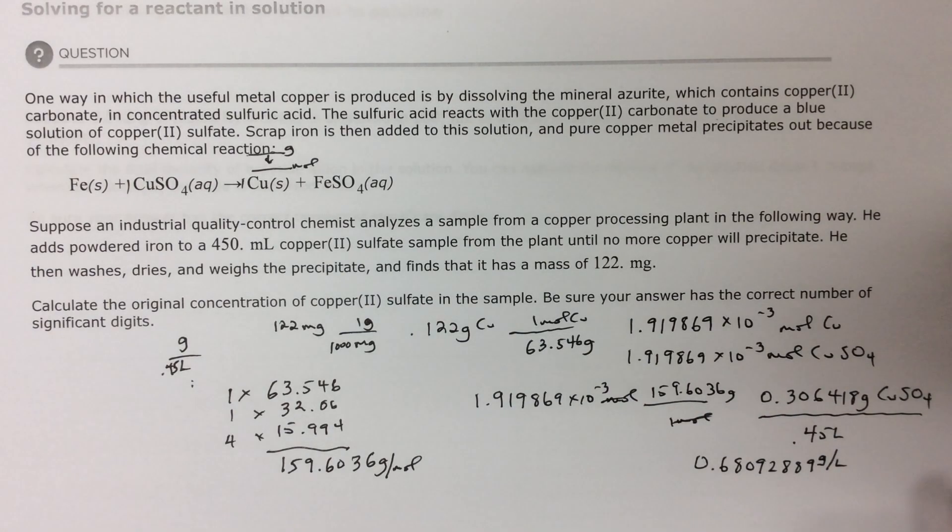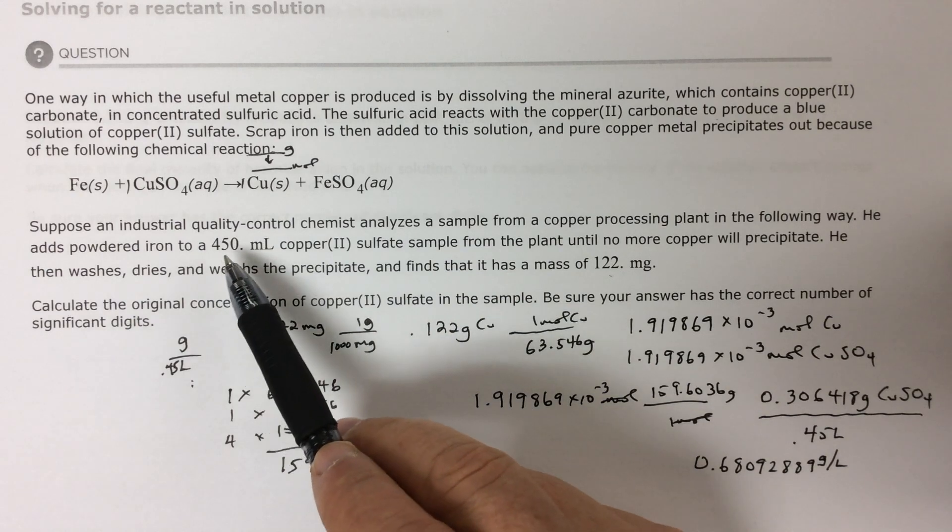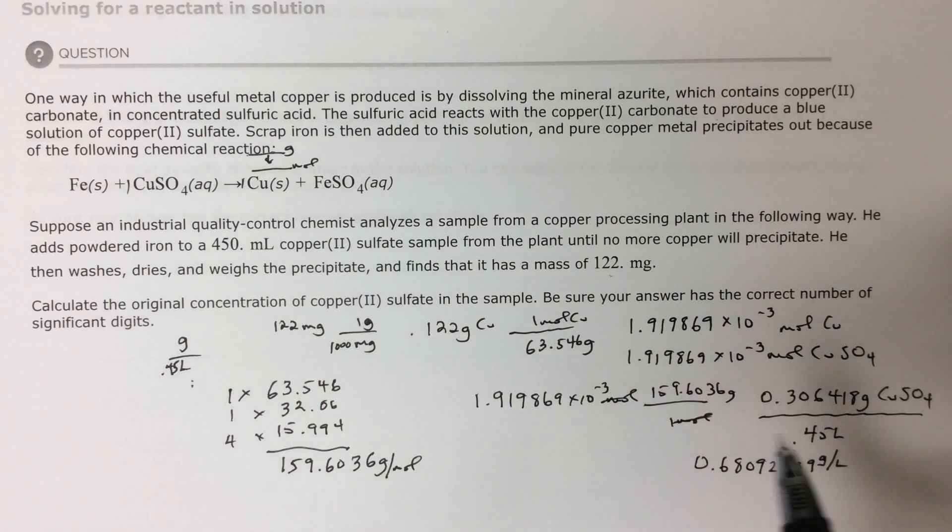Now I need to round this because I need to only go with what I'm given. I have three significant digits here. I have three significant digits here. That means I want to go to 0.68. That's 2. Here's 3. That 9 is bigger than 5. So it'll be 0.681 grams per liter.